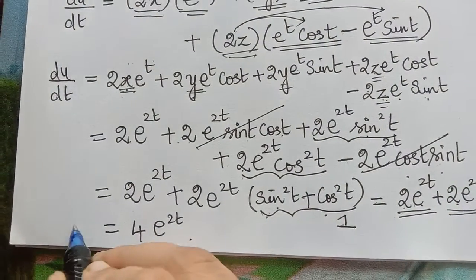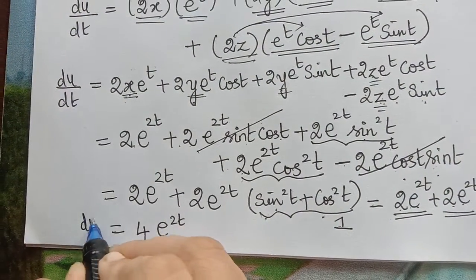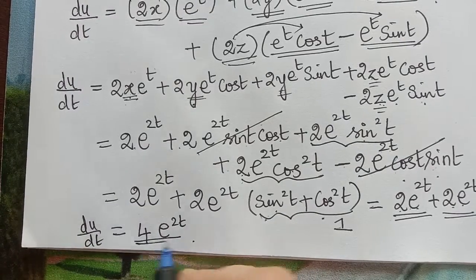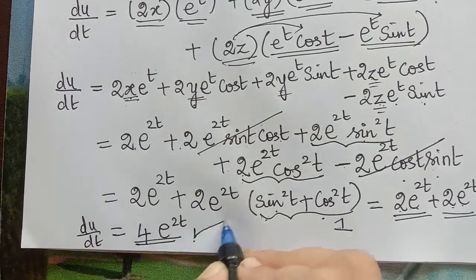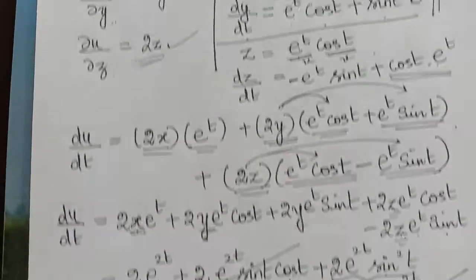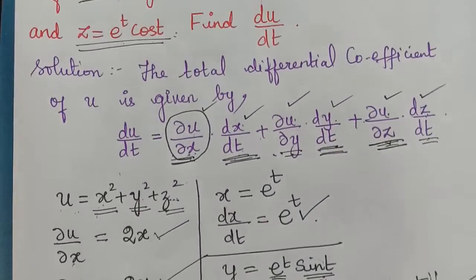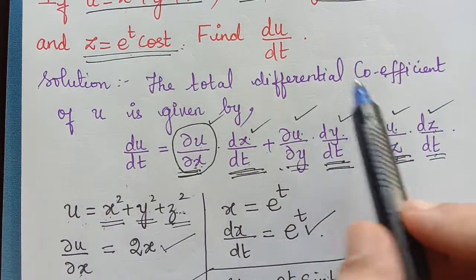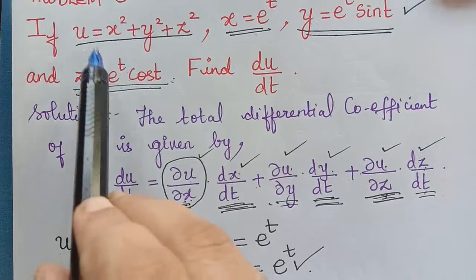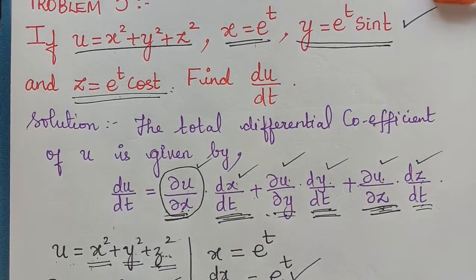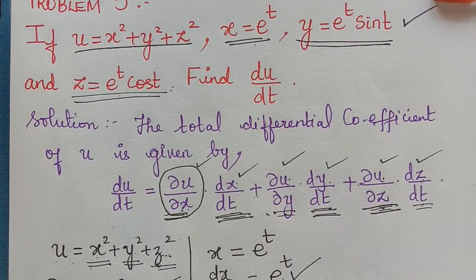Therefore, du/dt is equal to 4e to the power 2t is the answer. This is the total differential coefficient for the given u. Hope you have understood this problem. Thank you.